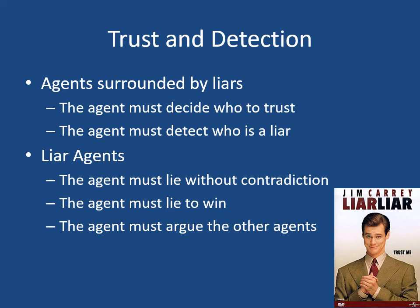There is also trust and lie detection included. The agent is surrounded by liars and must decide who to trust and detect who is a liar. This is very relevant to the topic of trust in AI. The liar agent must lie without contradiction, must argue with other agents, and there are several tasks covering the aspects of trust and deception.